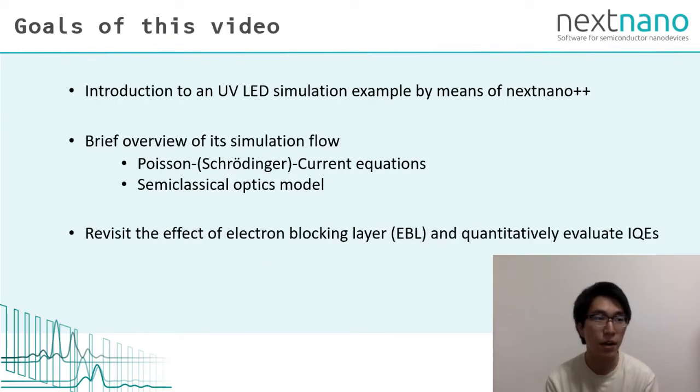Through this example, I would like you to see the brief overview of one of our simulation flows for general optical devices, which consists of Schrödinger-Poisson current equations and semi-classical optics models. At the example, we will analyze the effect of electron blocking layer, which is often introduced to the current UV LED structures, through the quantitative examination of internal quantum efficiency.